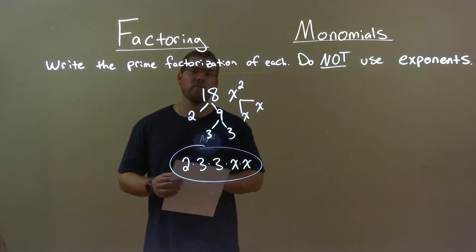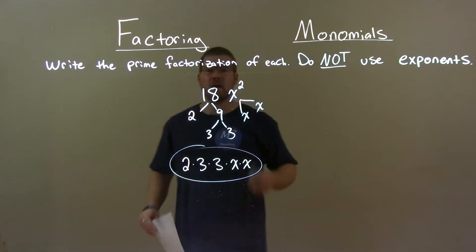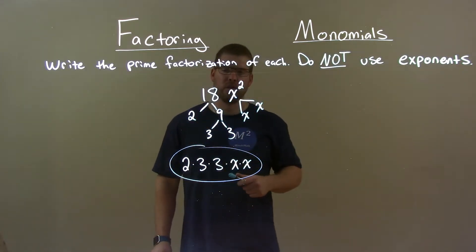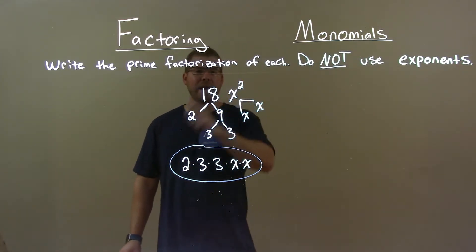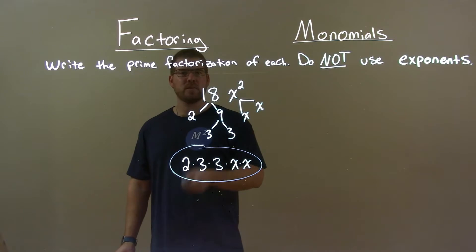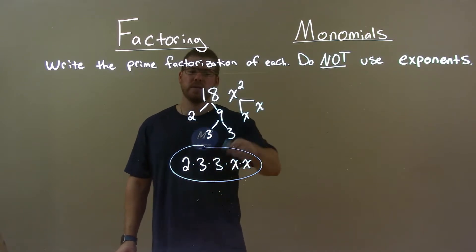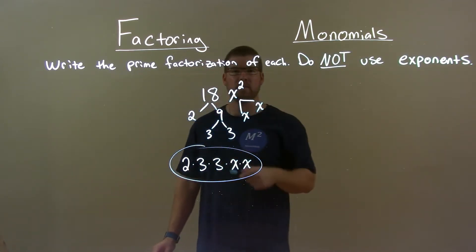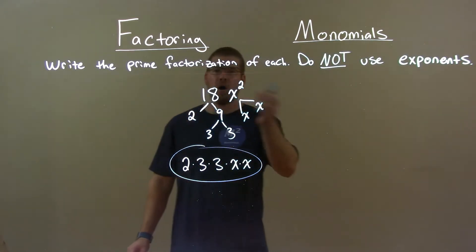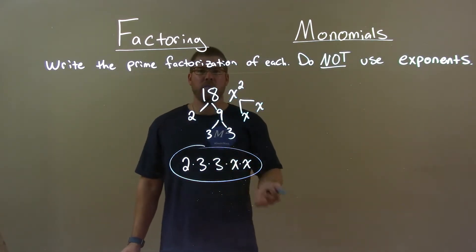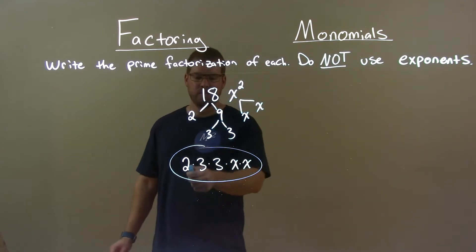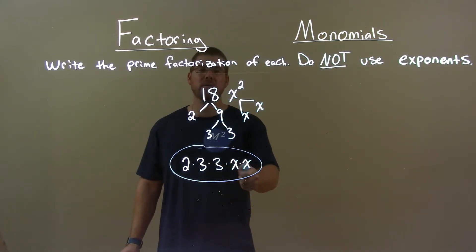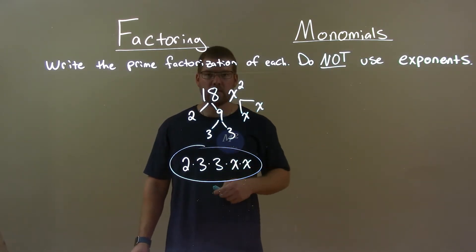Quick recap: we're given 18x squared and we have to find the prime factorization. 18 breaks down to be 2 times 3 times 3, and x squared is x times x. Final answer: 2 times 3 times 3 times x times x.